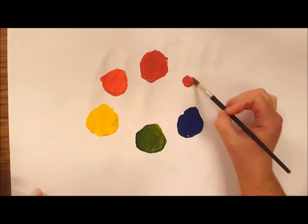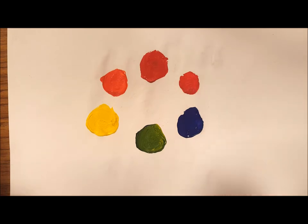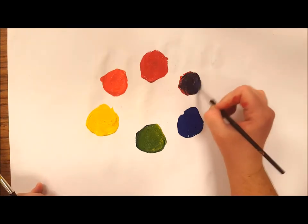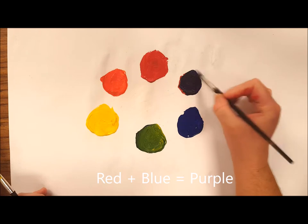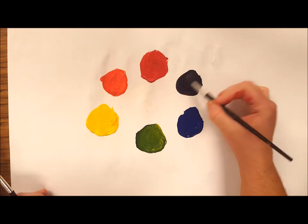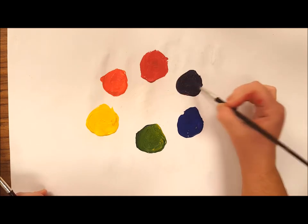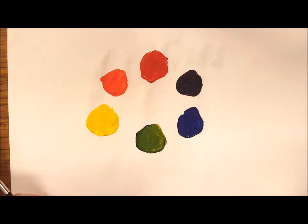Finally, I'm going to take red and mix it with blue. Red and blue together make purple or violet. Violet is also a secondary color because it's made by mixing two primary colors.